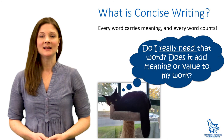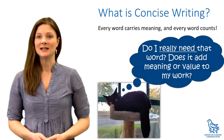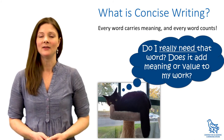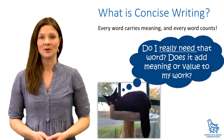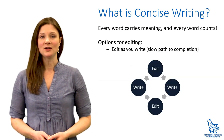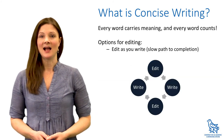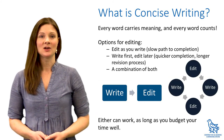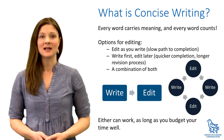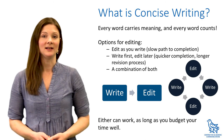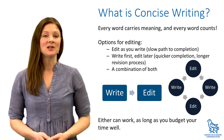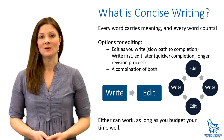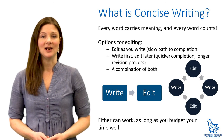In order to be a concise writer, you need to get into the habit of interrogating every word you write to make sure it's valuable and carries meaning. Some writers choose to edit as they write and others prefer to get all their thoughts down first and then edit more heavily at the end of the process. As long as you budget your time accordingly, either method or a combination of the two can work well.